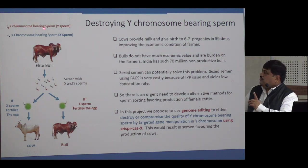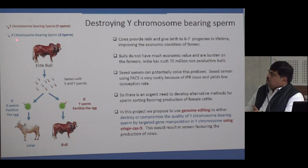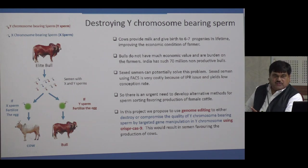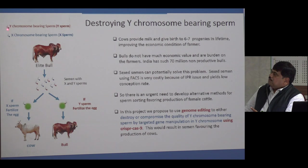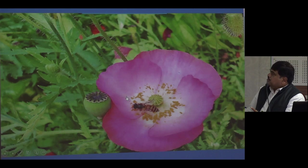One more important work: Y-chromosome-carrying sperm fertilizing a female egg makes a male (bull), while X-chromosome-carrying sperm makes a female. In India we need more females — bulls are useless, roaming the roads, and feeding them makes farmers poorer. Therefore, we are using genetic methods to impair Y-chromosome-bearing sperm — either eliminating them or making them slowly motile — so X-chromosome-bearing sperm fertilize first and produce maximum females.